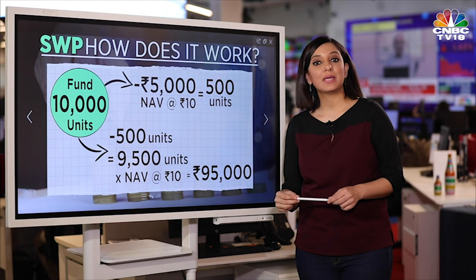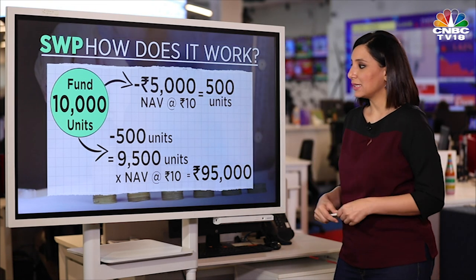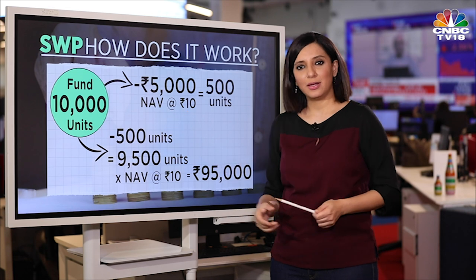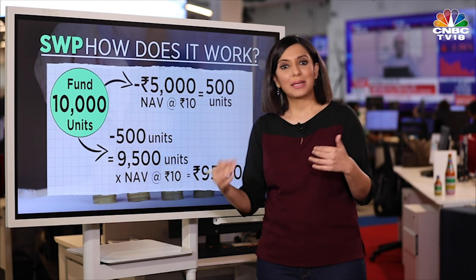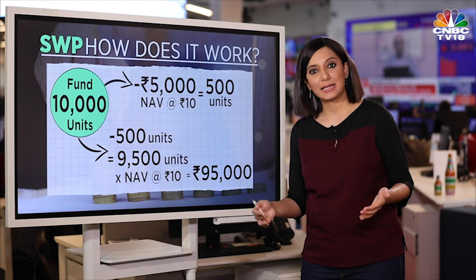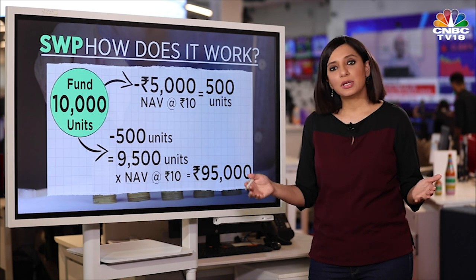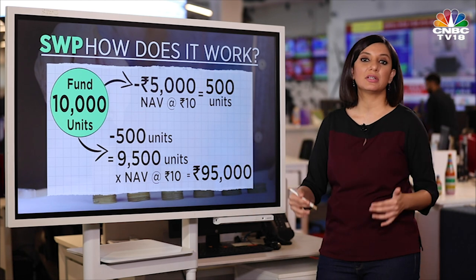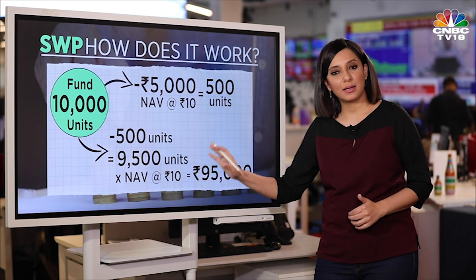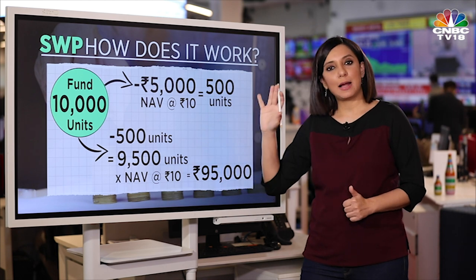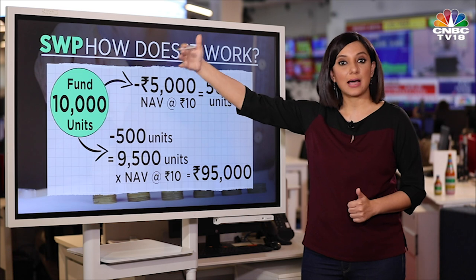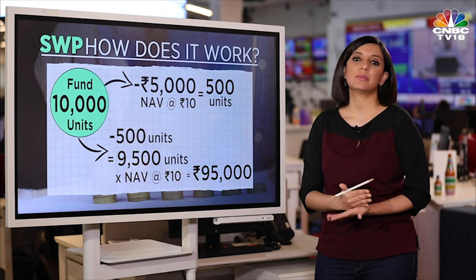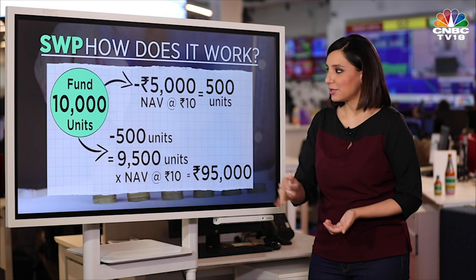How does a SWP actually work? As we talked about, this is a way to take out money. The other way is you can have a dividend option, but there is a reason it's not working out. One is, of course, the high taxation. The second is that a dividend may not always be available for a mutual fund to give out, so you cannot always rely on getting that dividend.